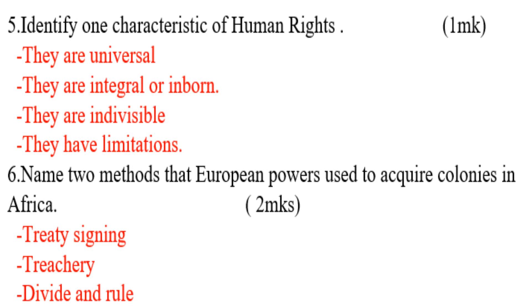Question number five: identify one characteristic of human rights. First, they are universal. Second, they are integral or inborn. Third, they are indivisible. Fourth, they have limitations.